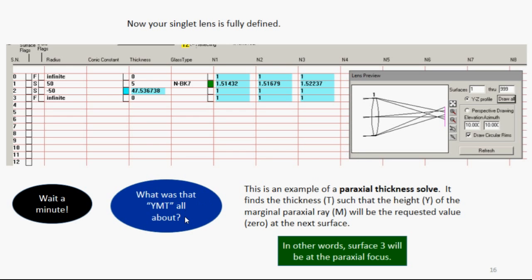Now the singlet is fully defined, you see it here in the picture. But let me talk about that YMT. That's an example of what we call a paraxial thickness solve. It finds the thickness T such that the height Y of the marginal ray M will be at the requested value, which is zero in this case. In other words, surface 3 is going to be at the paraxial focus.